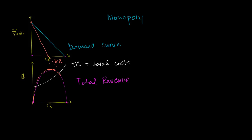Just from this graph, we can actually start to visualize what our economic profit is. Whenever we're talking about profit in an economics class, 99% of the time we're talking about economic profit — we're taking into account all of the opportunity costs, not just the explicit ones where we're paying money, but even the implicit ones. Back here our total costs are more than our total revenue, so this is an economic loss. This is breakeven. Now we're starting to make economic profit — it's just the difference between total revenue and total costs.